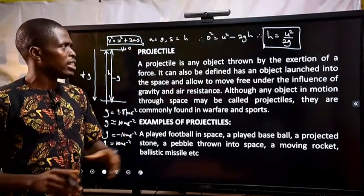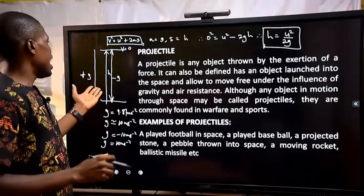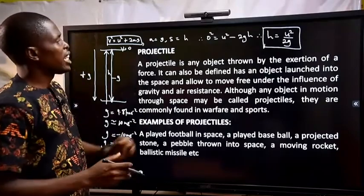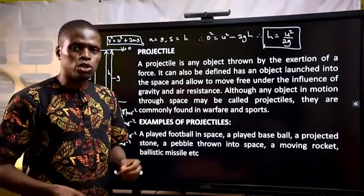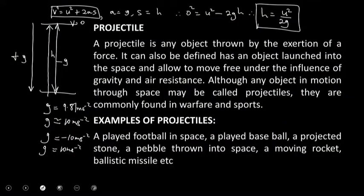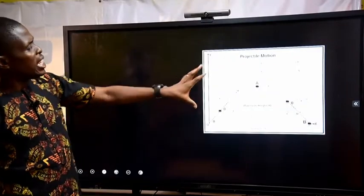A projectile is any object thrown by the assertion of a force. When an object is thrown up, a force is applied for it to reach a particular point and return to the point of projection. Examples of projectiles include a kicked football or baseball, a stone or pebble thrown through a parabolic path, and a ballistic missile or intercontinental ballistic missile projected from a military base. This diagram depicts the projectile motion and its basic parameters.